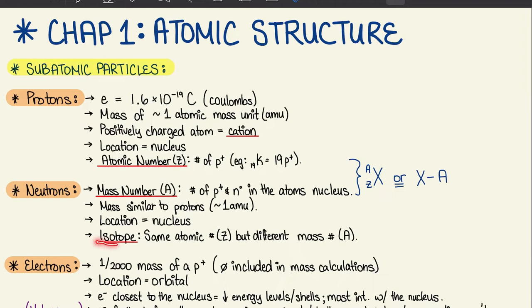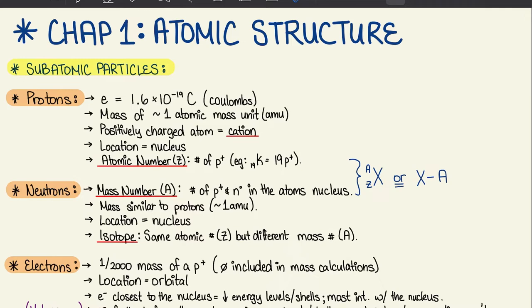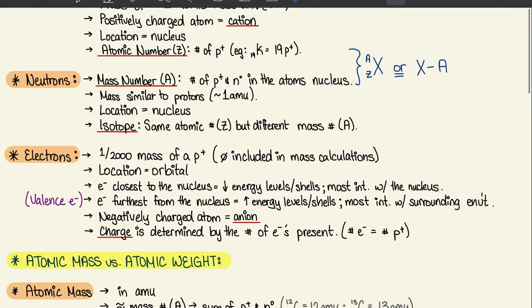For neutrons, the term isotope comes up a lot. That just means same atomic number Z, but different mass number A. It can be the same element but with different numbers of neutrons. For example, we have carbon-12, carbon-13, carbon-14, and so forth — just the same element but with a different number of neutrons.